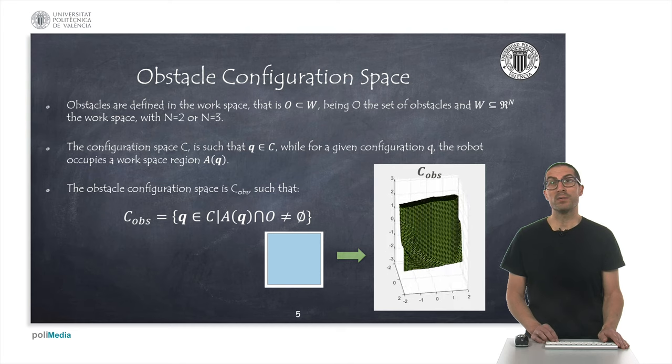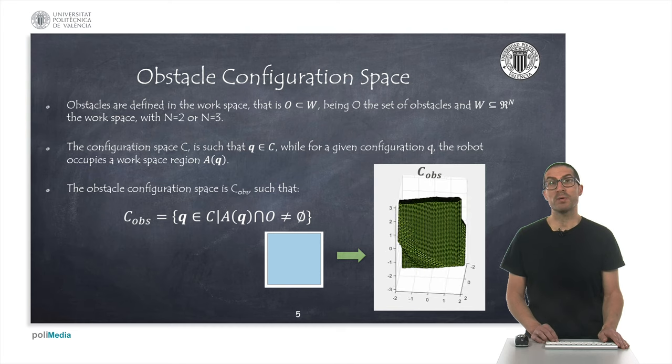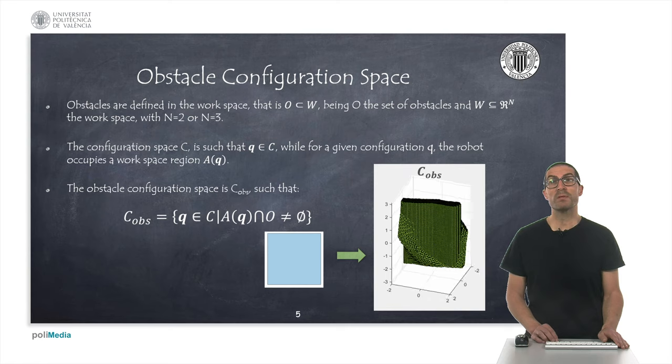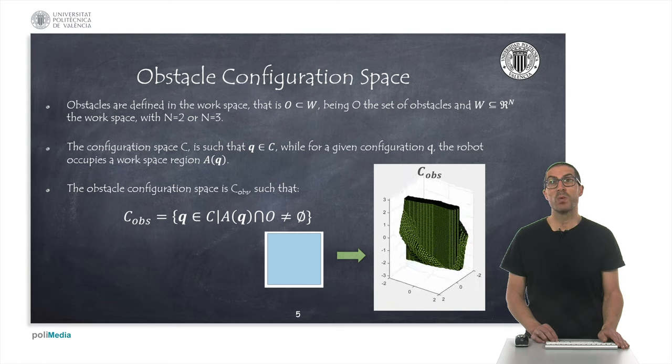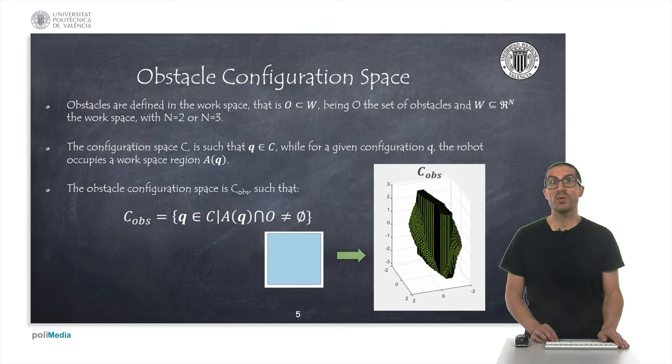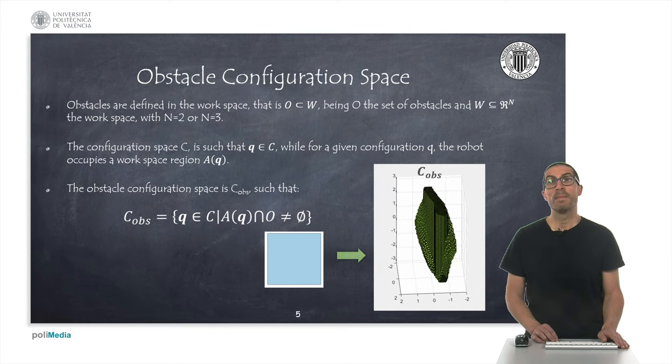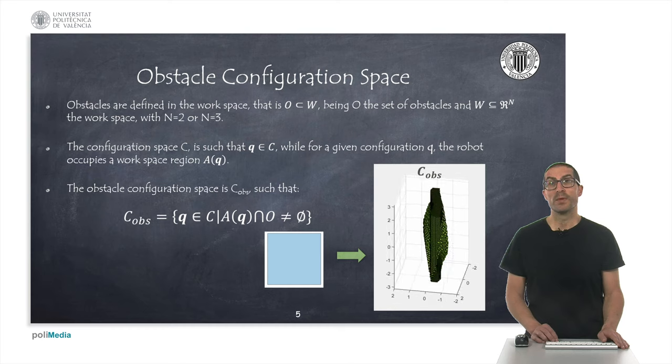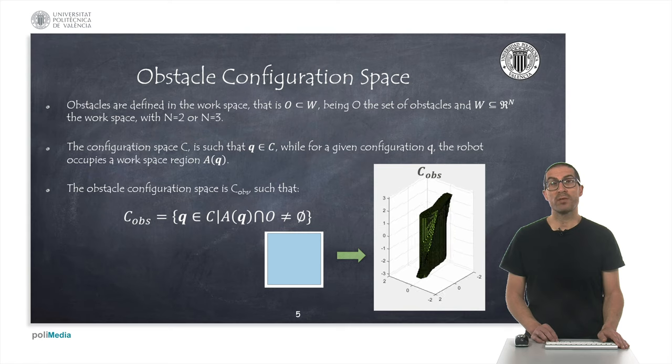However, as we have already defined in the previous video, the configuration space represents the subspace with all configurations that the robot can reach. For a given configuration Q, the robot will occupy a region AQ of the workspace, and that will obviously depend on the robot's geometry.